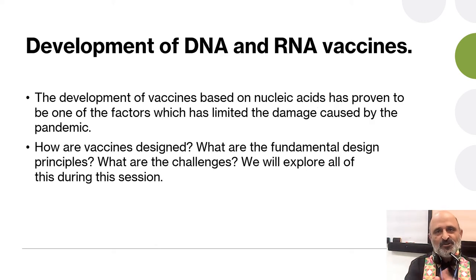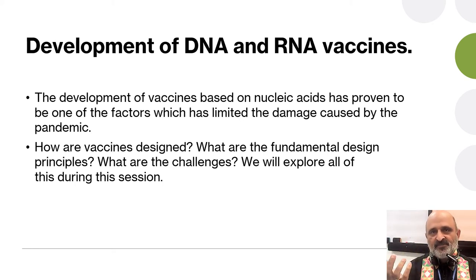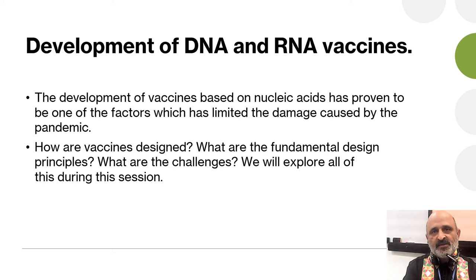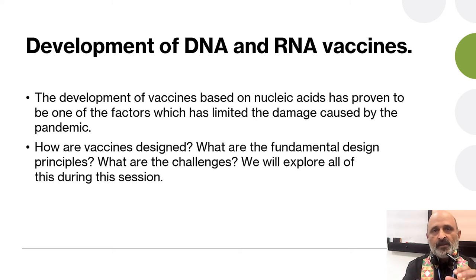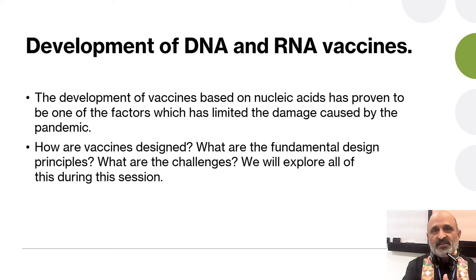This brings us to the next lecture, which follows from the first two: the development of DNA and RNA vaccines. The first generation of vaccines primarily focused on inactivated or attenuated viruses, bacteria, or pathogens. Then we had the next generation of vaccines — the subunit vaccines. But currently we are facing a challenge of vaccinating mass populations, and this can only be achieved by using DNA and RNA vaccines. In this module we will discuss how DNA and RNA vaccines are developed and how they can be applied to meet the challenges faced by a growing global population.